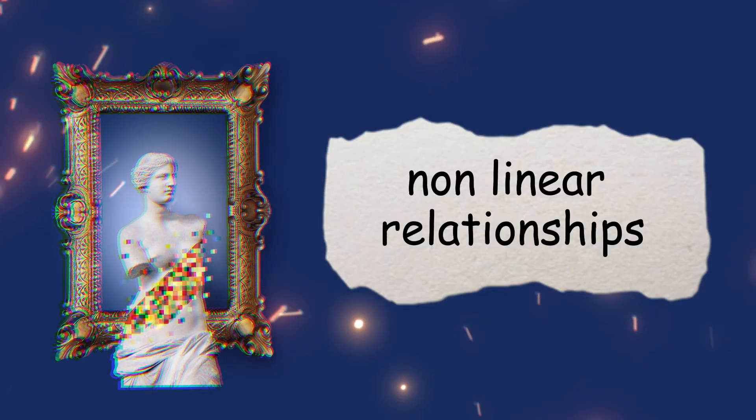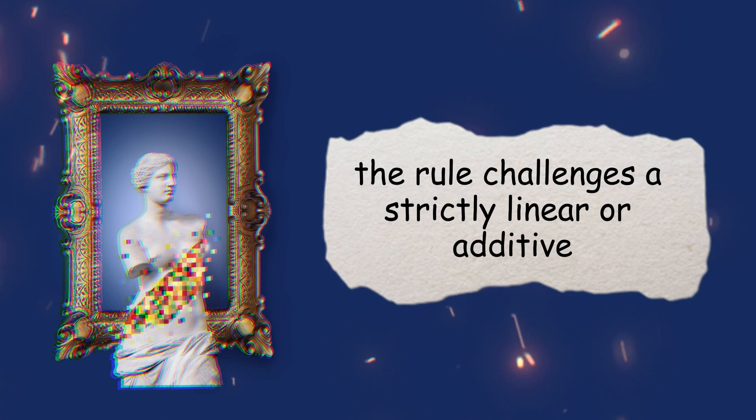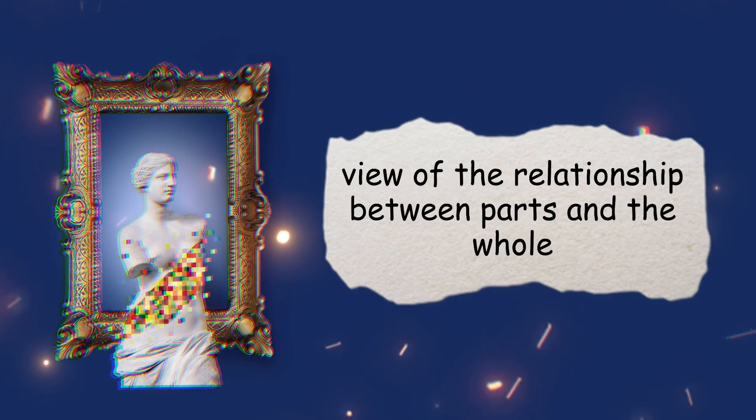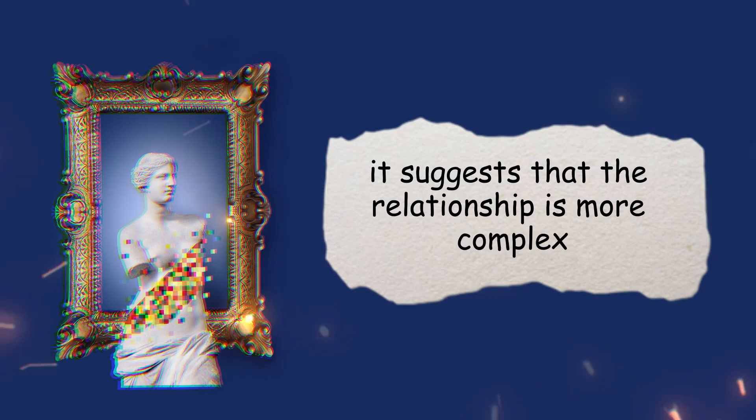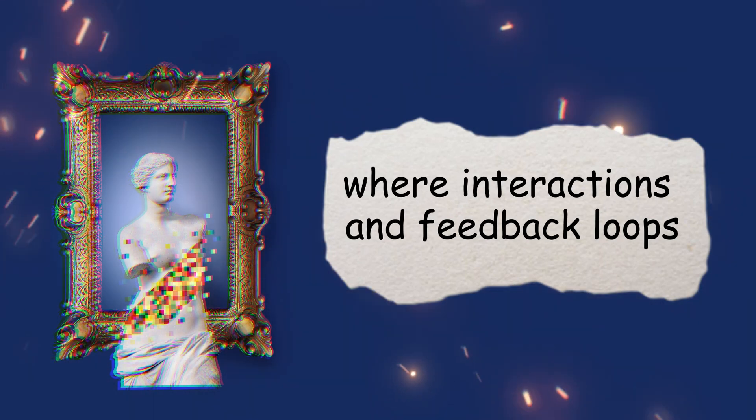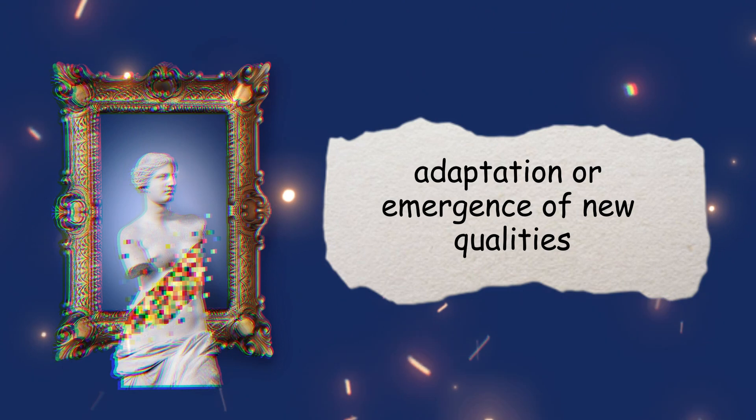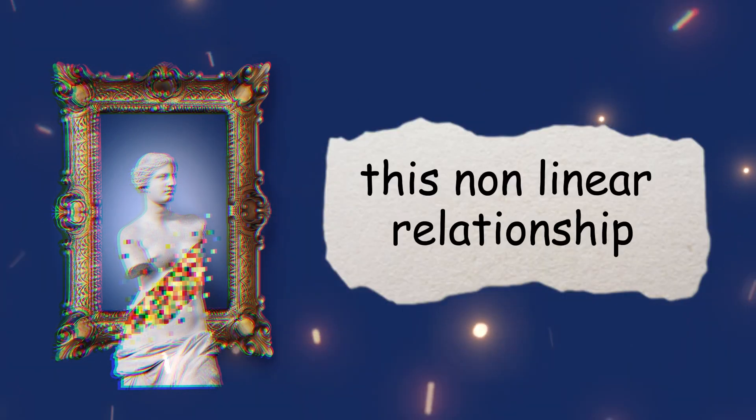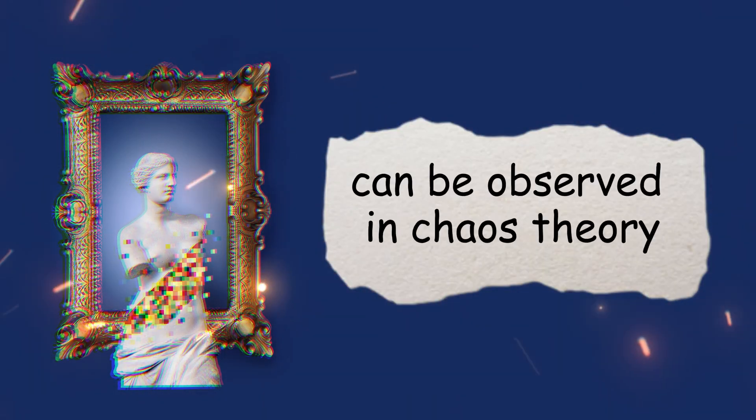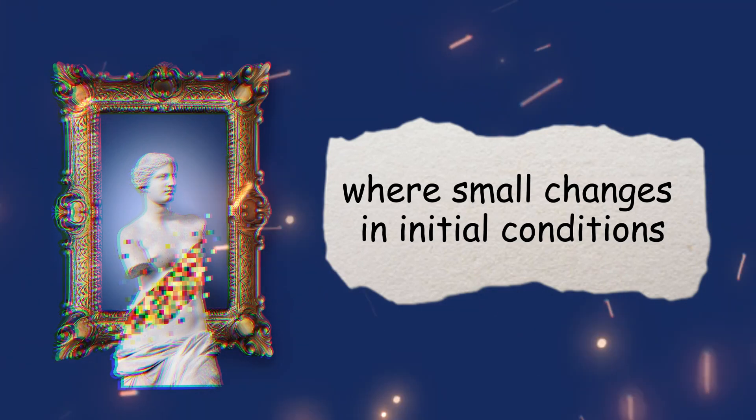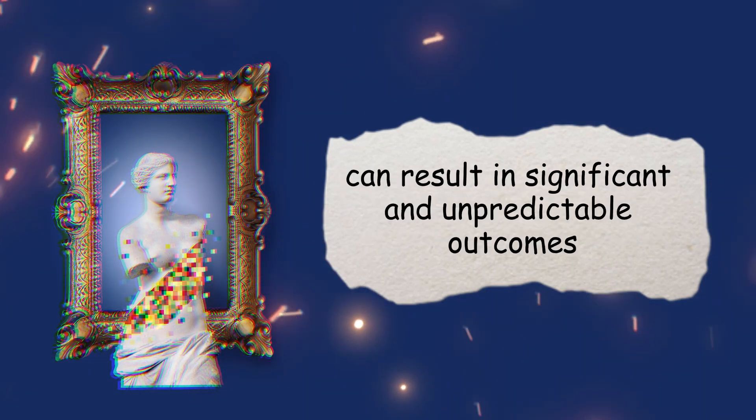Non-linear relationships. The rule challenges a strictly linear or additive view of the relationship between parts and the whole. It suggests that the relationship is more complex, non-linear, and dynamic, where interactions and feedback loops can lead to amplification, adaptation, or emergence of new qualities. This non-linear relationship can be observed in chaos theory, where small changes in initial conditions can result in significant and unpredictable outcomes.